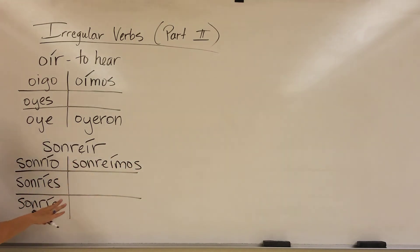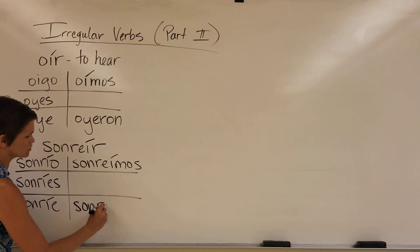Sonreímos, okay, it's an ir verb, it has an ir ending, we're using this accent to separate the sound of those two vowels, just like it is in the infinitive with the accent. Sonreímos and sonríen, okay.